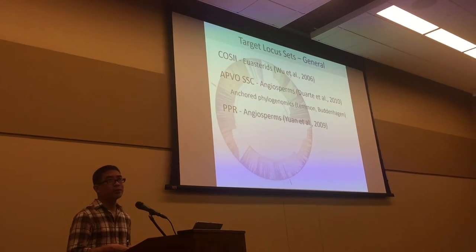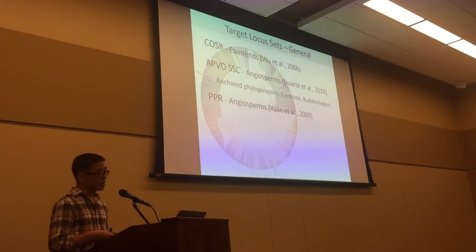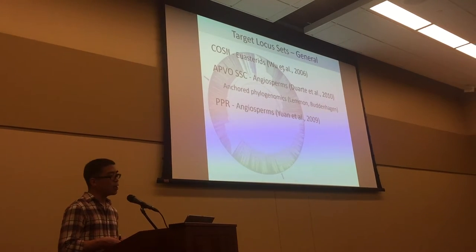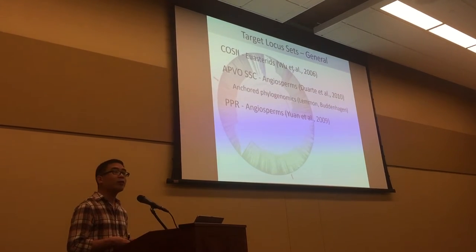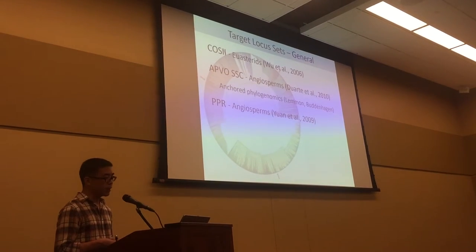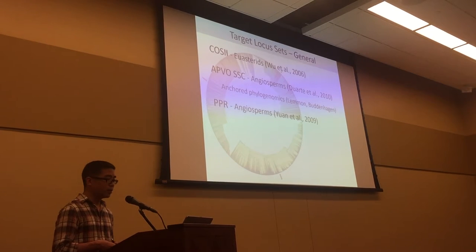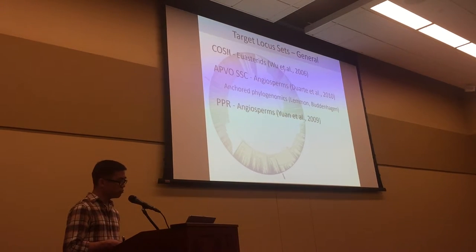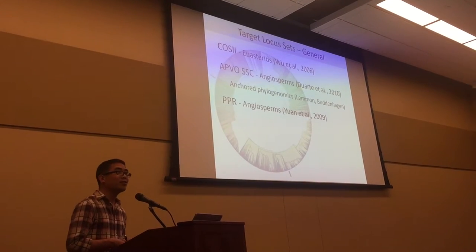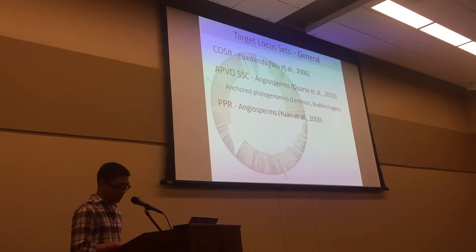Some of these locus sets include the Conserved Ortholog Set 2 (COSII), the shared single-copy locus set found by comparing the genomes of Arabidopsis, Populus, Vitis, and Oryza (APVO), and also the Pentatrichopeptide repeat (PPR) gene family in angiosperms. The anchored phylogenomics locus set developed by the Lemmons makes use of that APVO set.